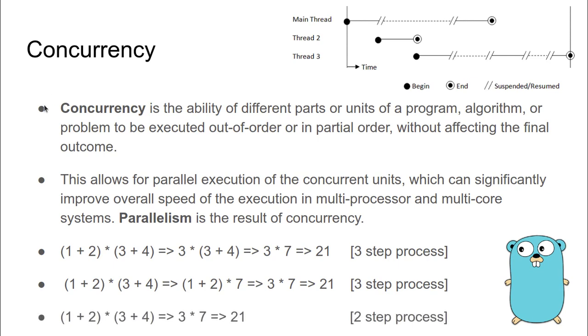As you can see, we calculate 1 + 2 and 3 + 4 parallelly. We get the outputs 3 and 7, and when we multiply 3 by 7, we get the output of 21.